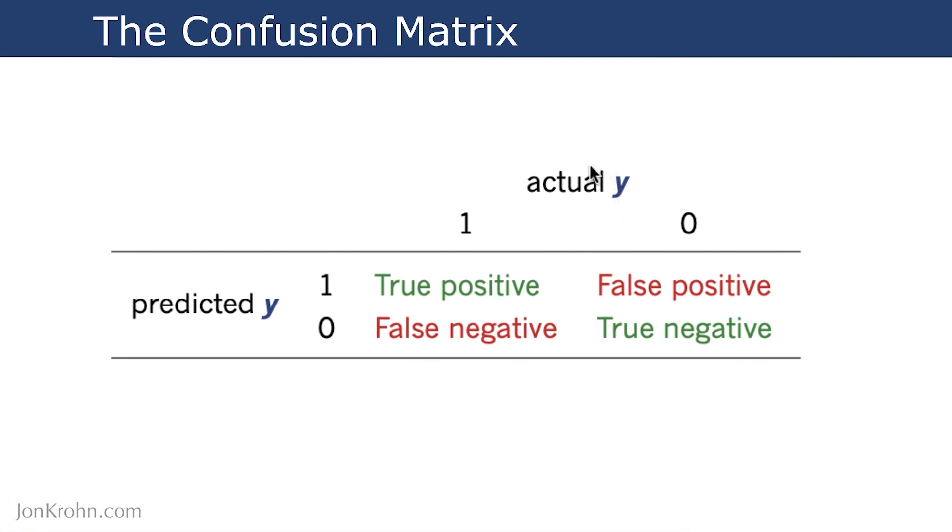Then same kind of thing when there's really not a hot dog, and the algorithm predicts that there's not a hot dog, that's a true negative. The algorithm is not confused.